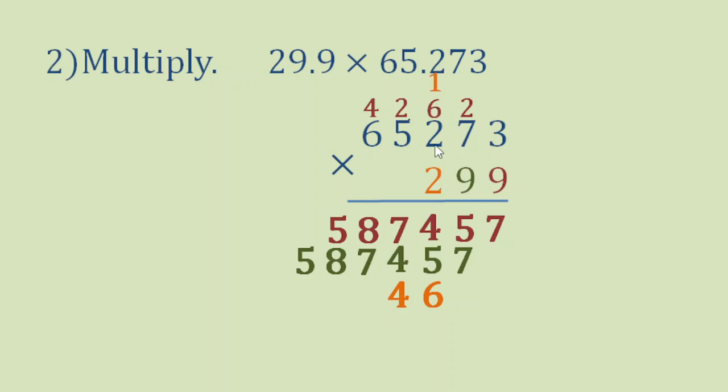2 times 2 is 4, plus 1 is 5. 2 times 5 is 10. Bring down 0, carry 1. 2 times 6 is 12, plus 1 is 13.